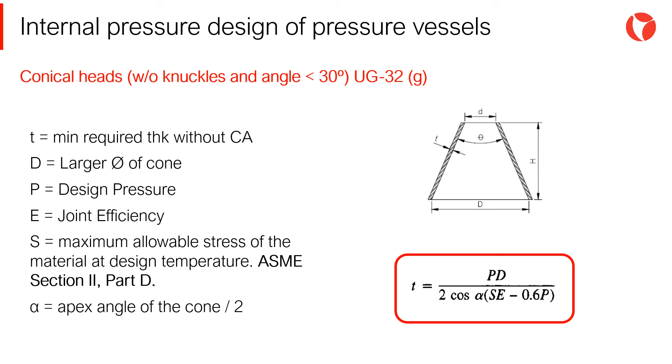For conical transitions without knuckles and with half apex angle less than 30 degrees, applicable equations are the same as for conical heads. The required thickness is a function of the inner diameter, the design pressure, the joint efficiency, and the maximum allowable stress of the material at design temperature.